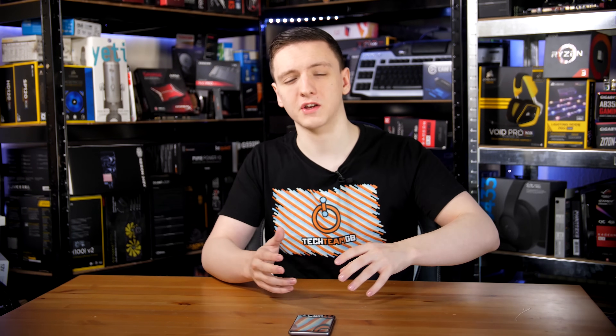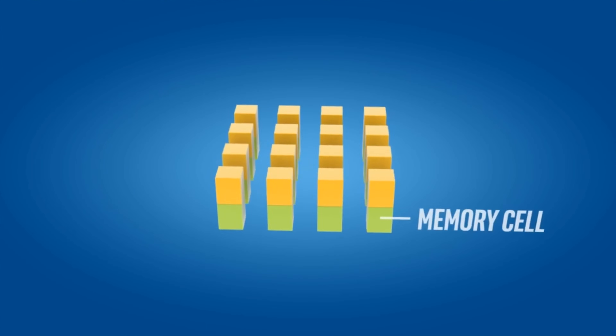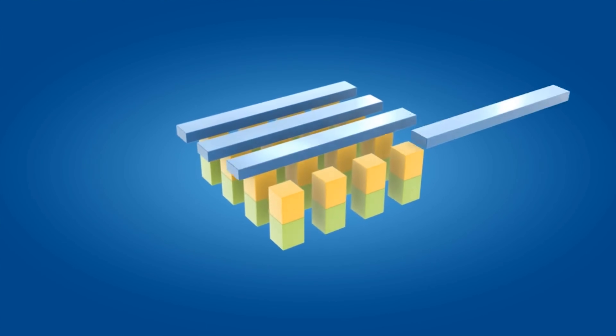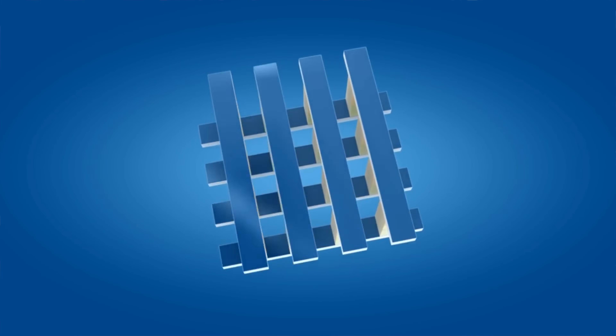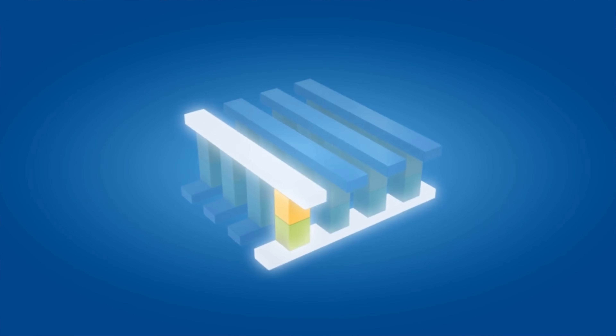There are a couple of alternatives to NAND flash worth mentioning. Intel's Optane uses 3D XPoint technology, which is faster than NAND flash but in theory easier to produce than DRAM. It's still non-volatile — data persists without power — but offers access speeds closer to DRAM than traditional NAND flash. NOR flash is also a thing: slightly faster in theory but much more costly and difficult to produce, so it's mainly used in read-only memory applications and isn't as popular as NAND flash.